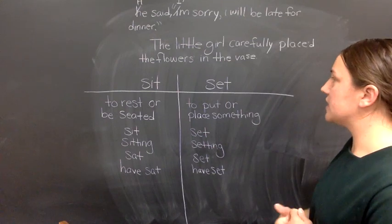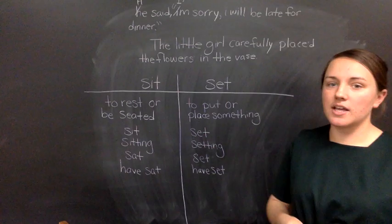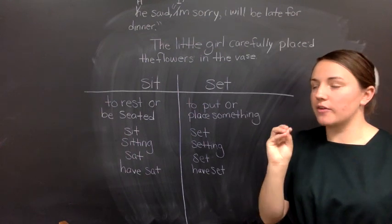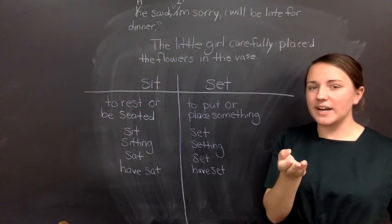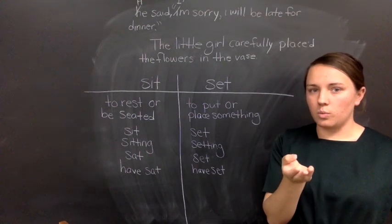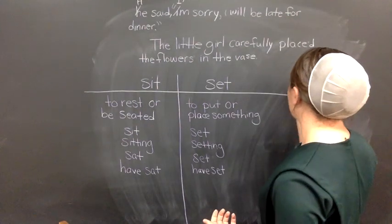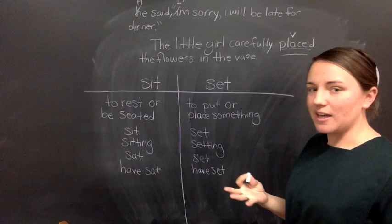Next, I have another sentence here. The little girl carefully placed the flowers in the vase. We're going to label the different words in this sentence, and then I'm going to diagram it. Look at the sentence and figure out what is the verb. What is the verb in the sentence? The action or being. Place is our verb.